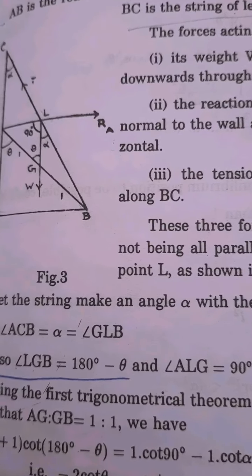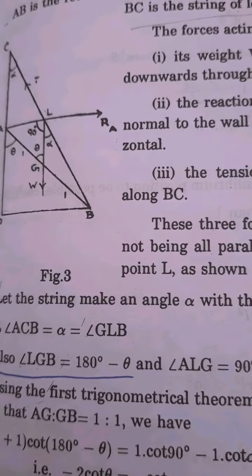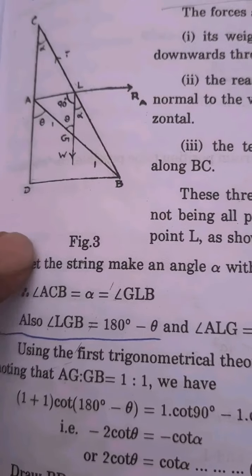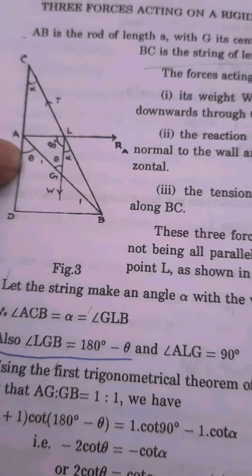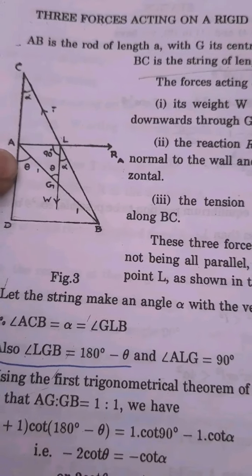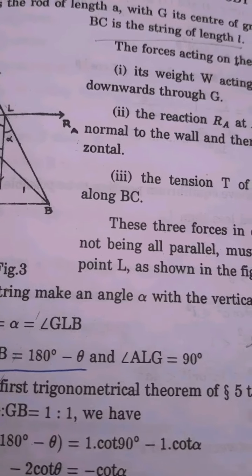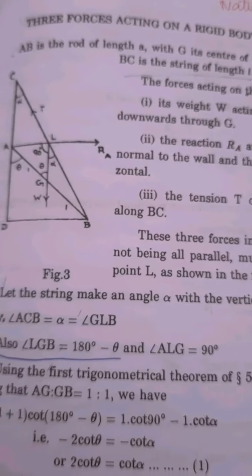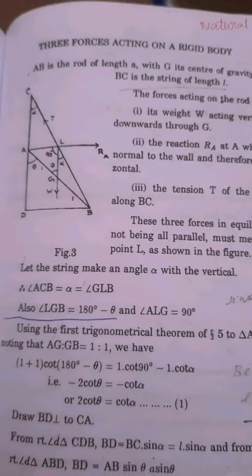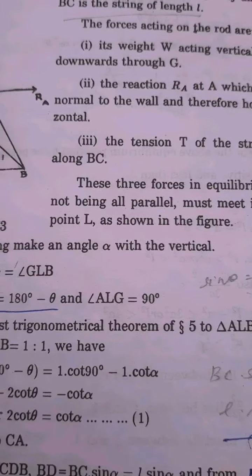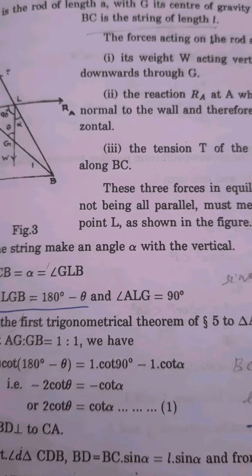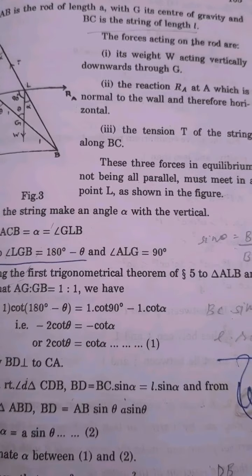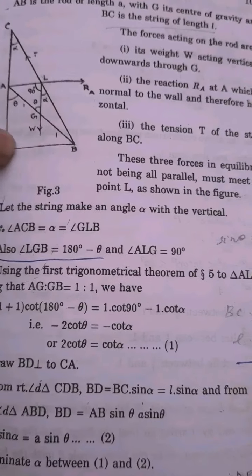Show that the rod can rest inclined to the wall at an angle theta given by cos squared theta equal to L squared minus A squared by 3A squared. We will prove it by considering the diagram and the forces acting on the rod. First, the weight W acting vertically downwards.